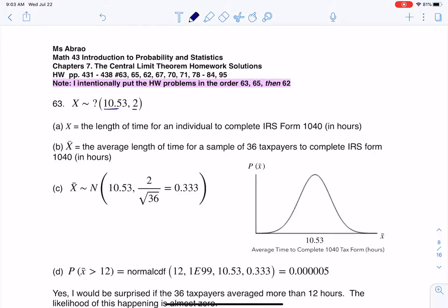It says that the distribution is unknown, so you see me putting a question mark there because I don't know if it's normal, uniform, skewed right, or skewed left. I can hear that my variable is the length of time for an individual to complete an IRS form - that's a numerical variable, it is continuous, so I keep that in mind as I move forward with this.